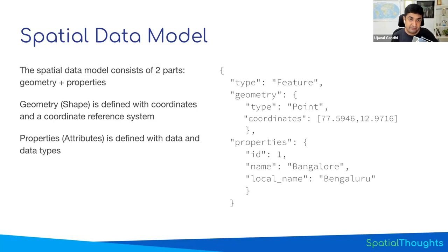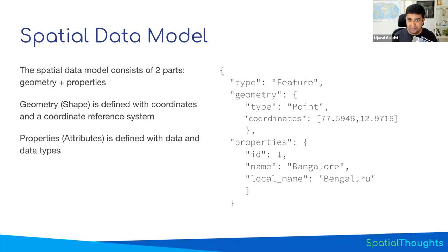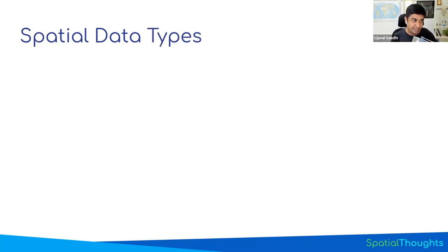This is an example of spatial data in the GeoJSON format, but the format is not important here. The idea is that for a dataset to be considered spatial data, you need both a location — here we have a point location with some coordinates — and we also have some properties, some information about the location. So location and information about the location when they're put together, that is considered as spatial data.